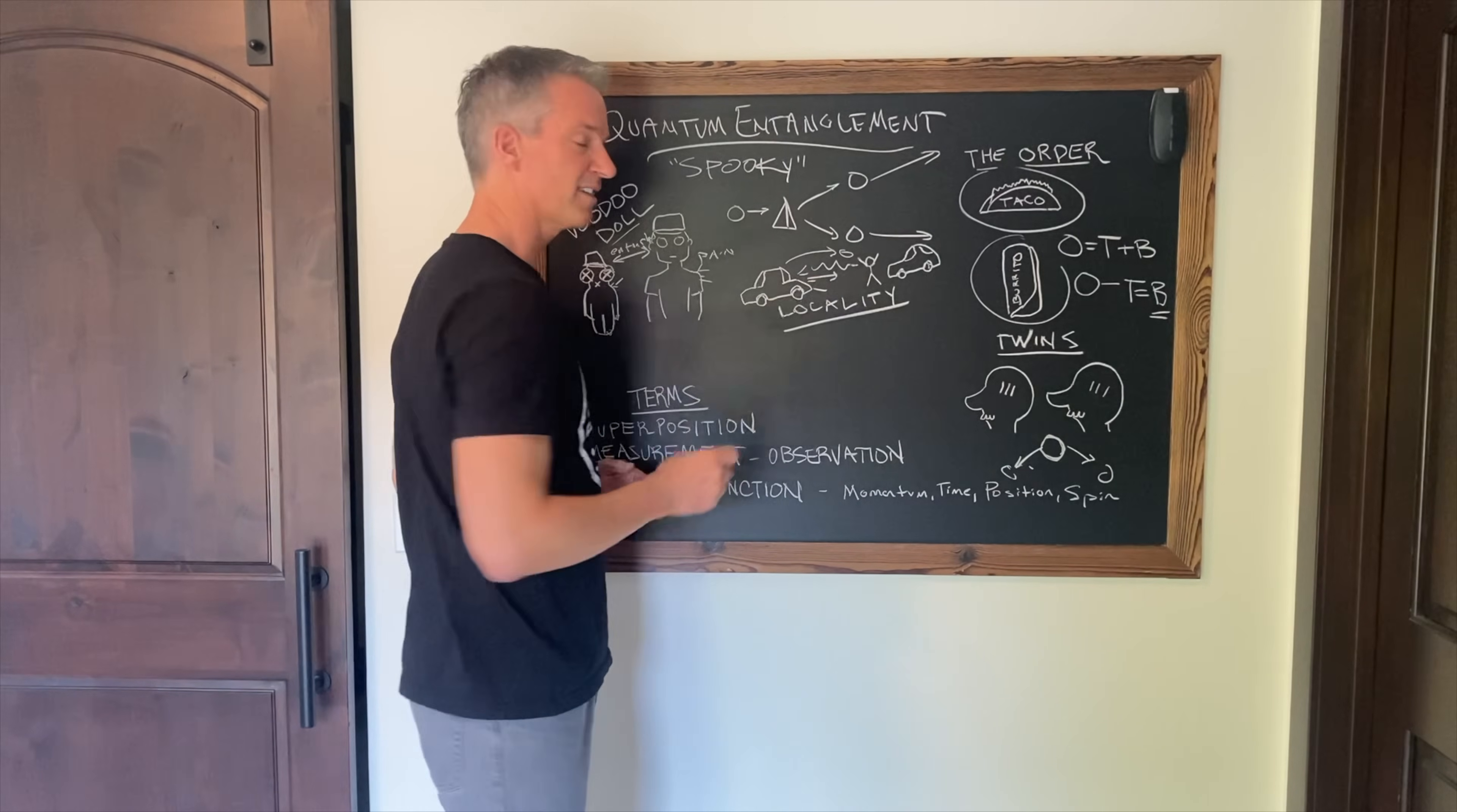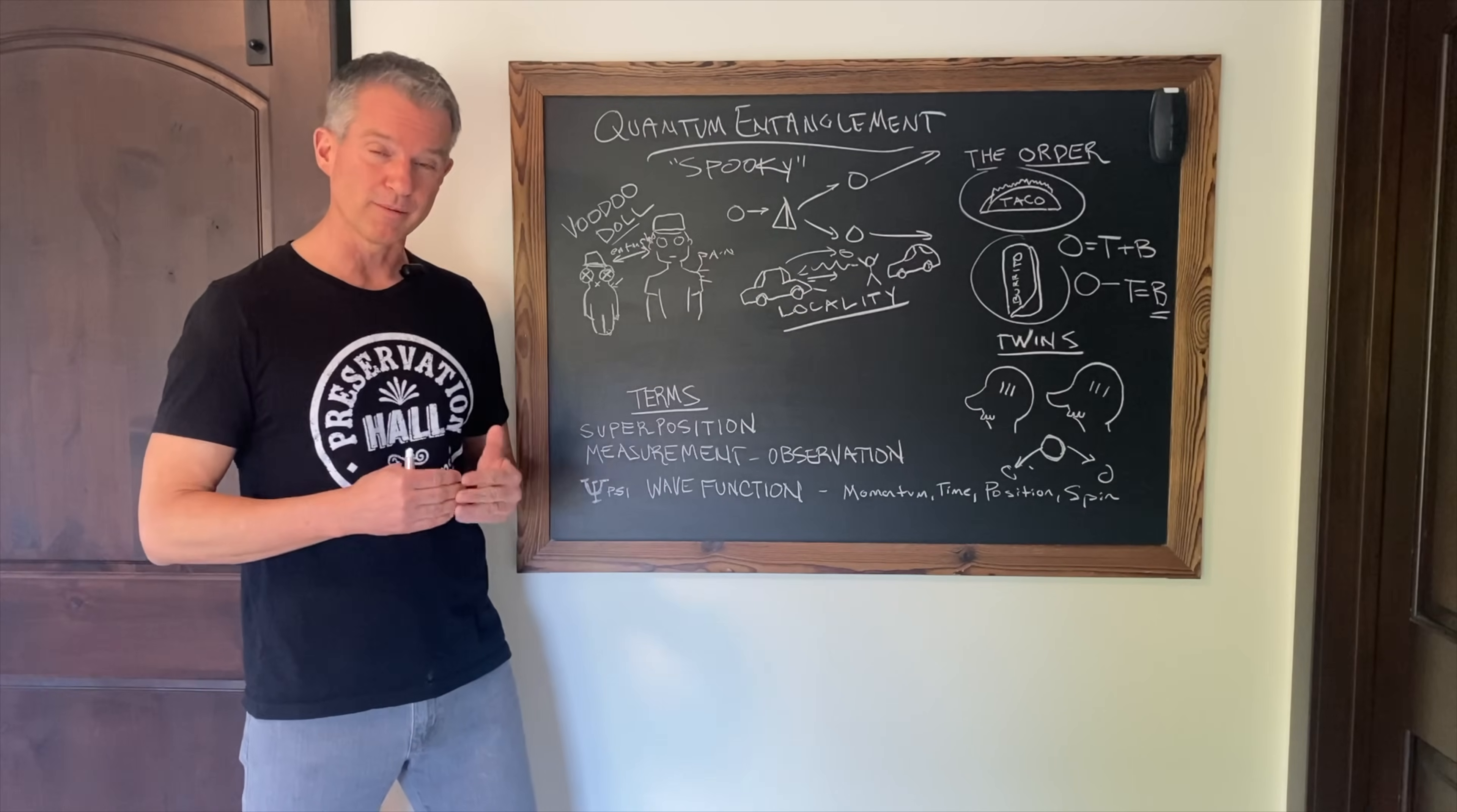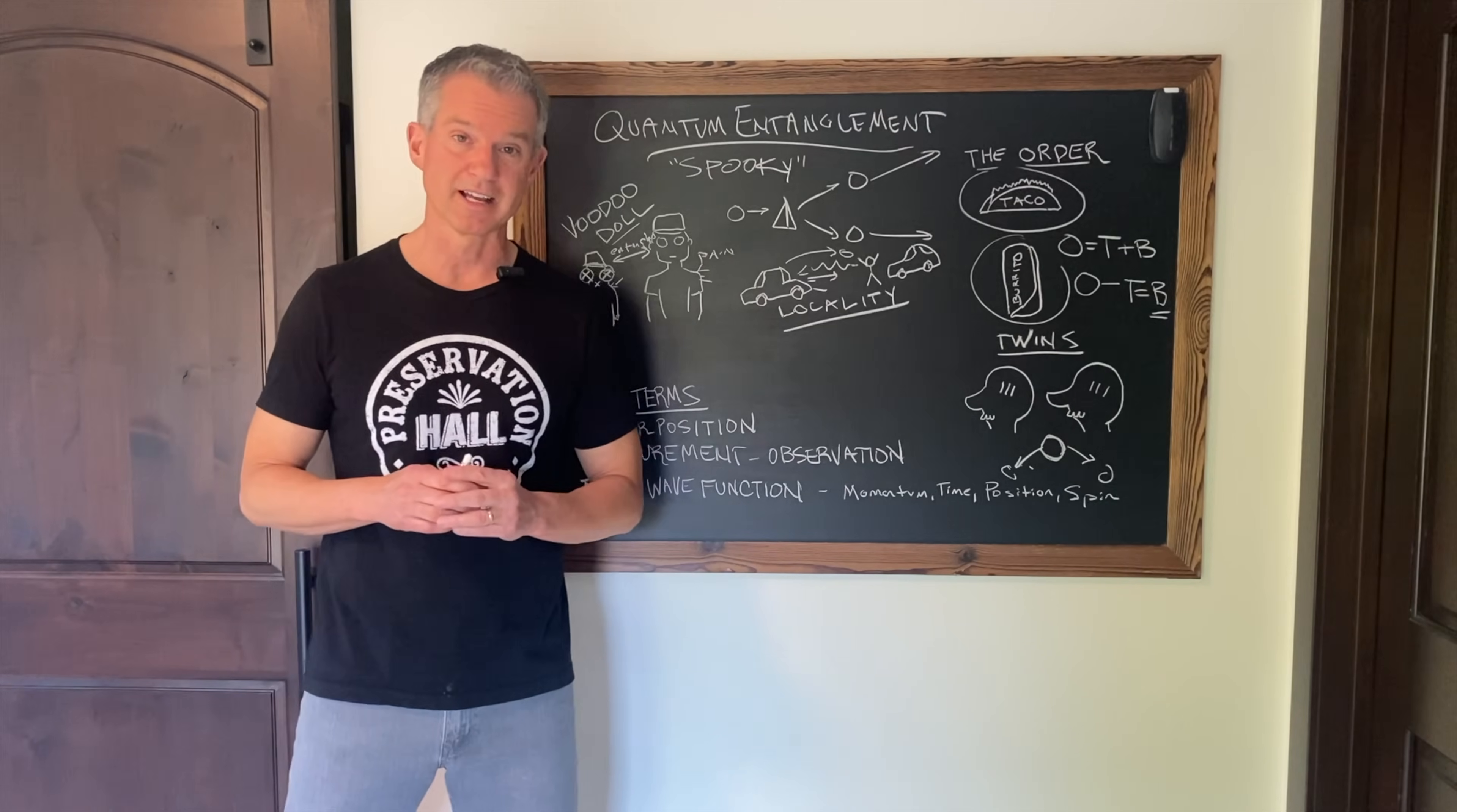That'd be about the fastest way for that information to travel because in classic physics, there is no way I could get my car or even any information from one car to another faster than the speed of light. That's it. But that's just not the case with entanglement.